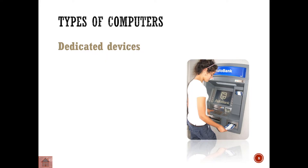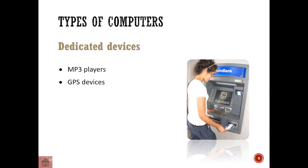Now we have dedicated devices. An MP3 player only plays music — a dedicated device is something that only does one thing. GPS devices used to only do the GPS thing: it only gave us maps and showed us how to get from point A to point B. That's all the GPS device did.